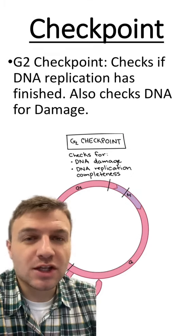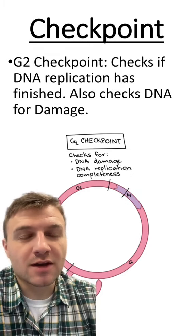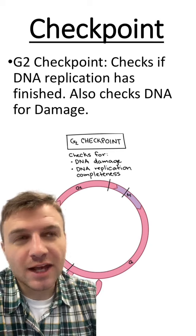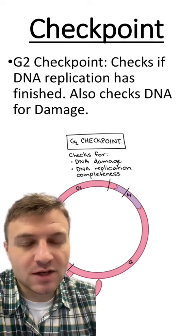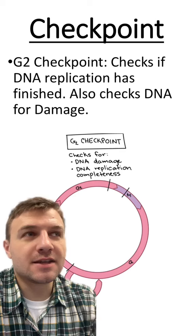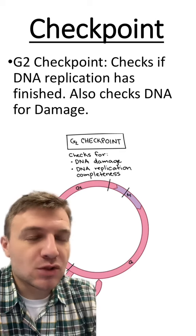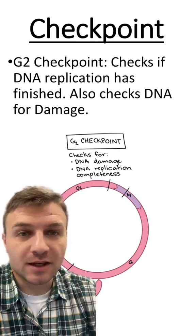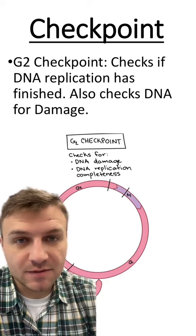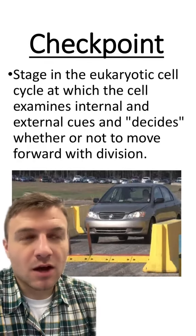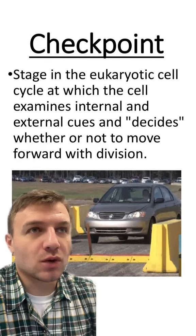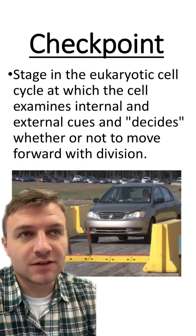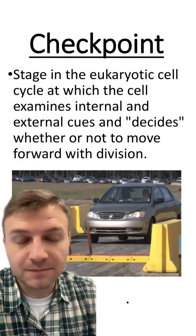During the G2 checkpoint, the cell is going to make sure that DNA replication has occurred and it's going to check for DNA damage, because DNA damage or mutations to the DNA could lead to the cell becoming cancerous. So basically, all of these checkpoints help to make sure that the processes within the cell cycle are going to plan.